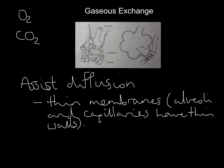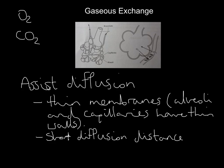Another way is a short diffusion distance. Look at the diagram — the distance between the alveoli and the capillary is next to nothing. The gases don't have to struggle to find their way; they diffuse out of one and straight into the other, giving a very short diffusion distance.